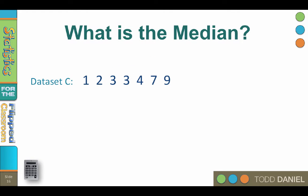In data set C, what is the middle number? We count in 4 from either side, and we find that the median is 3. Because this is an odd number of data points, the median is exactly in the middle.